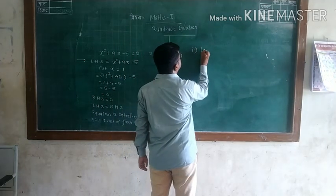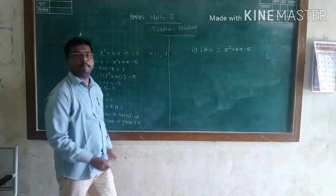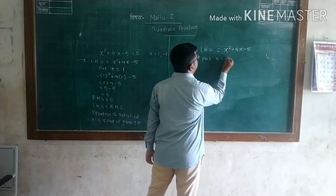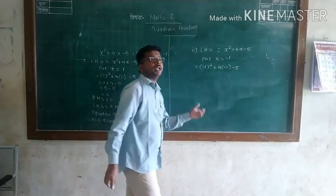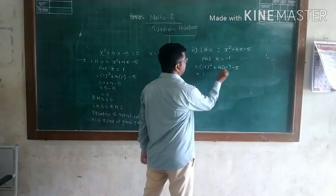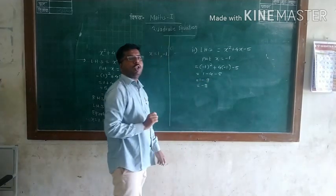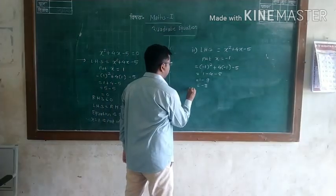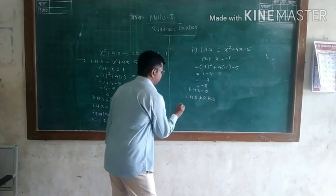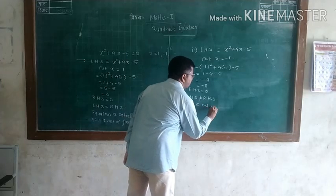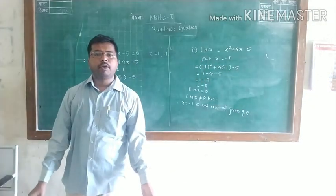Now check x = -1 in the same equation. LHS: x² + 4x - 5, put x = -1: (-1)² + 4(-1) - 5 = 1 - 4 - 5 = 1 - 9 = -8. The value of LHS is -8, but RHS is 0. Since LHS is not equal to RHS, x = -1 is not a root of the given quadratic equation.